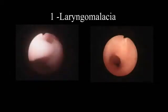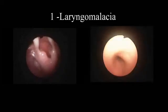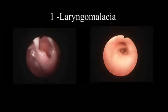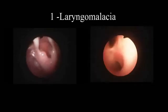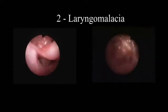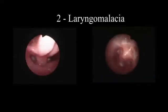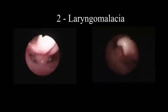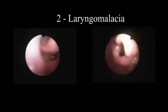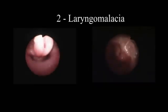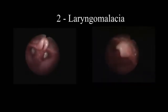The larynx shows an omega-shaped epiglottis, cuneiform prolapse, and short aryepiglottic folds. The tracheobronchial tree may be examined for additional anomalies. In laryngomalacia, the prolapse is in the supraglottis, either posterior redundant mucosa and accessory cartilage, due to posterior displacement of the epiglottis in the glottic inlet.